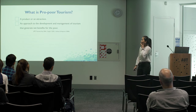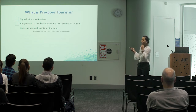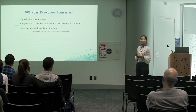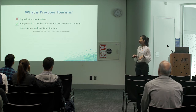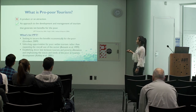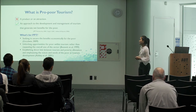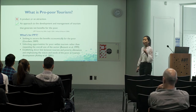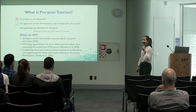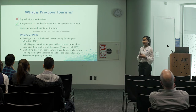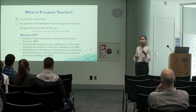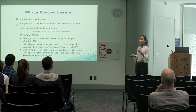What is pro-poor tourism? There has been debate about whether pro-poor tourism is a product, attraction, or an approach. The answer is that it is not a product or attraction — it is an approach to the development and management of tourism. There are three main purposes of developing pro-poor tourism: first, to secure benefits for the local community, meaning the poor; second, to unlock opportunities for the poor rather than simply expanding the overall size of tourism; and third, to establish a linkage between tourism and poverty alleviation, ensuring that the voices and needs of local people are heard and taken into consideration.